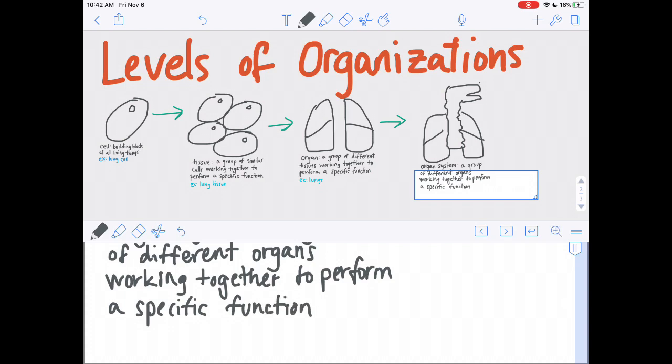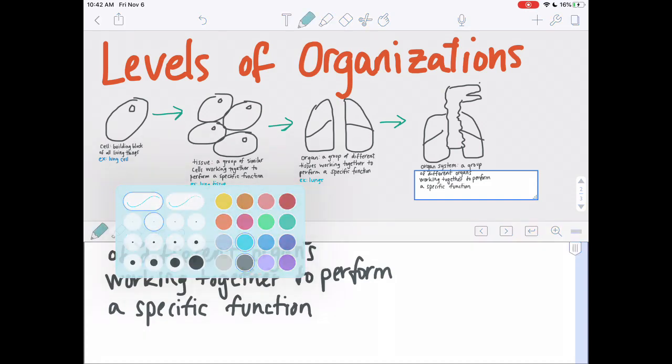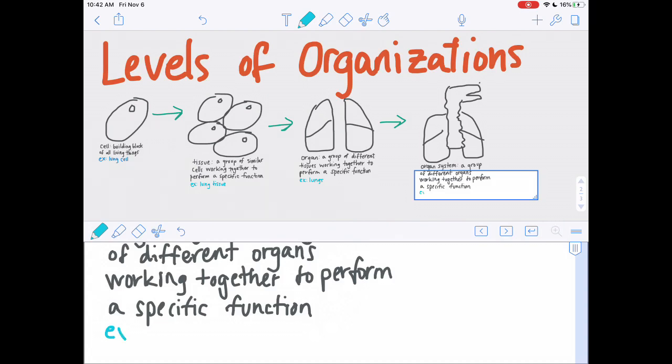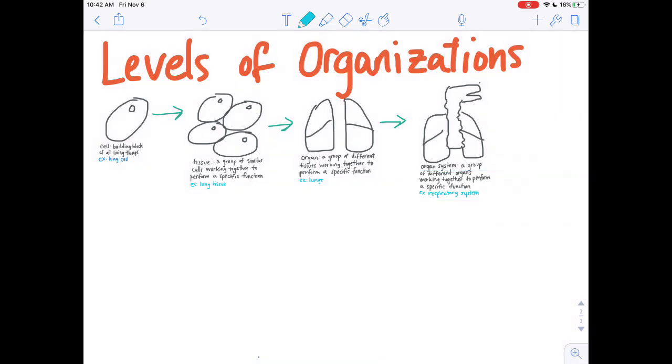So we have cells making up tissue, tissue making up organs, organs making up organ systems. And our example for this organ system is called the respiratory system. The respiratory system is the system that includes your lungs and your trachea and it helps you breathe. It helps you do that gas exchange that is vital to being alive.